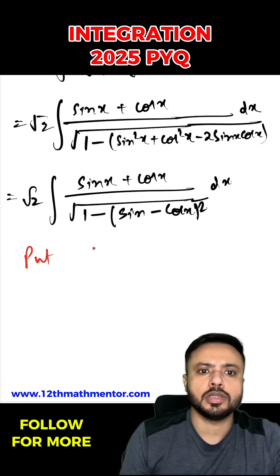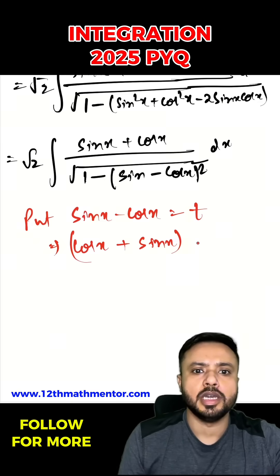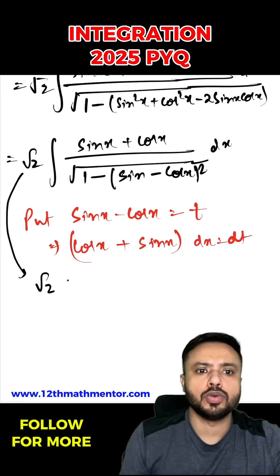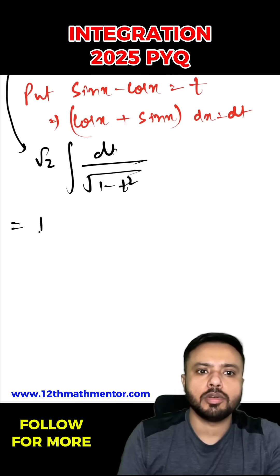Now I'm going to use a substitution, so we have to put sine x minus cos x as t. That means cos x plus sine x dx will be equal to dt. Now I'm going to write this integral in terms of t as root 2, so this whole thing will get replaced by dt. So dt upon root of 1 minus t square, so it will be equal to root 2 sine inverse t plus c.